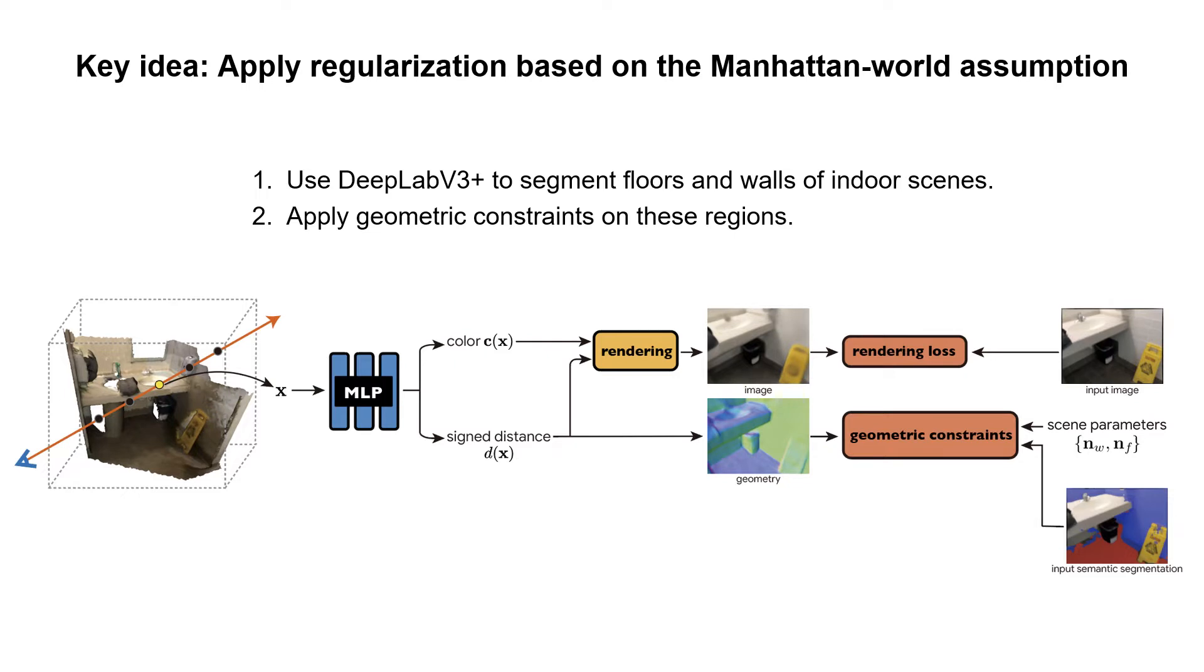This figure presents a pipeline that applies the regularization to implicit neural representations. We use an off-the-shelf 2D semantic segmentation network to segment floors and walls of indoor scenes, and then apply geometric constraints to these regions.